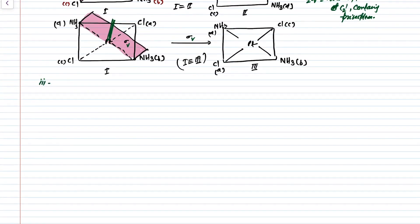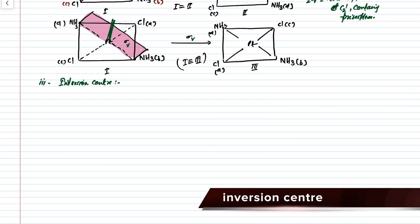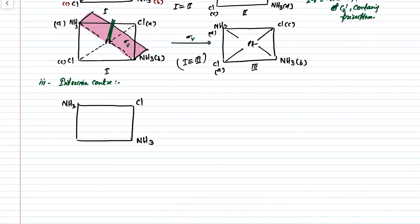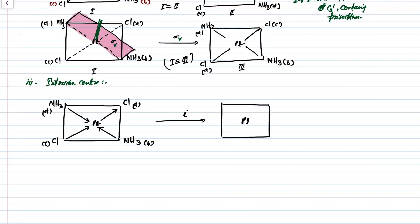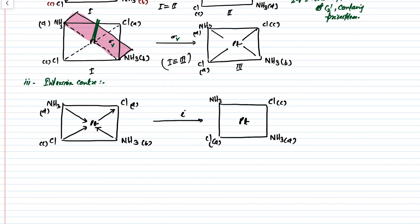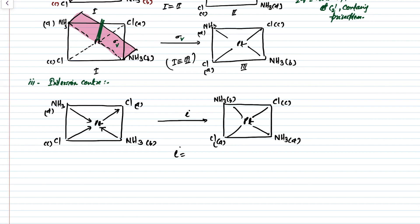The third symmetry element is the inversion center — is it present? Yes. In this molecule, inversion center is present. Just perform the inversion operation: chlorine A, NH3 B, NH3 D, Cl C around platinum. We interchange the positions of the diagonal atoms through platinum. We get a new configuration: Cl C, Cl A, NH3 D, and NH3 B. The two structures are the same, so the inversion center is present in this molecule.